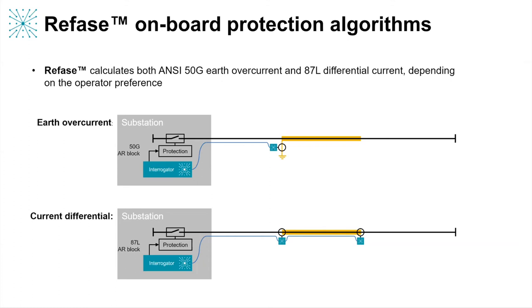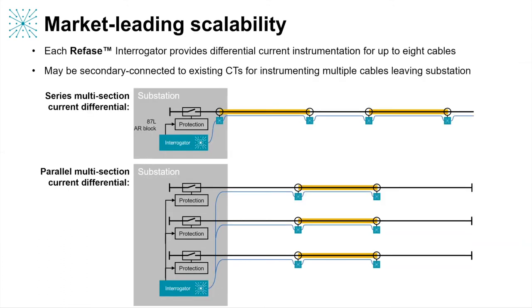The choice of one or other of these methods is up to the operator, and importantly we can provide either or both in a single scheme. To deploy one or other of these systems would only use a small portion of the total sensor budget available to each Rephase scheme — that's 50 sensors per fiber over 100 kilometers of distance. So the system has market-leading scalability, which allows multiple series or parallel cable sections to be instrumented with a single system. Given this full budget of 50 sensors per fiber over 100 kilometers, we can provide full differential current monitoring of up to eight cable sections.